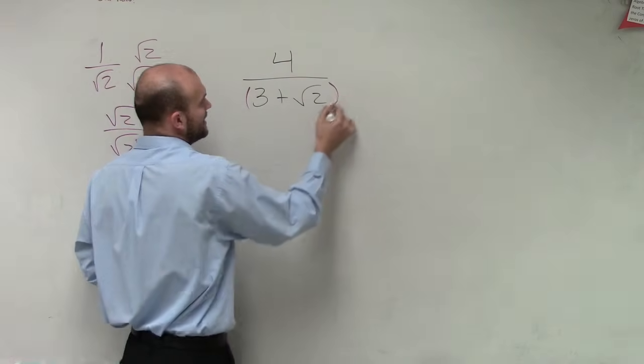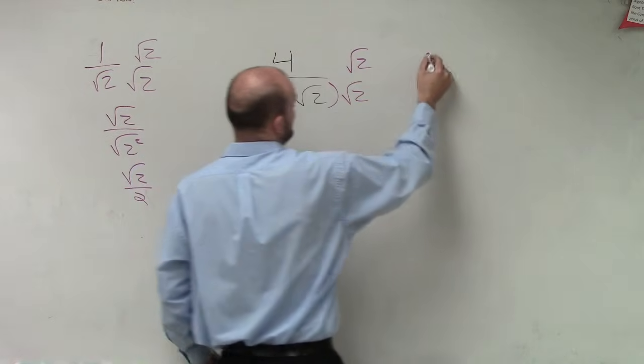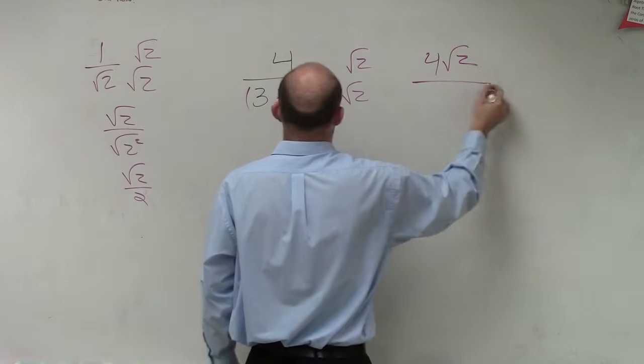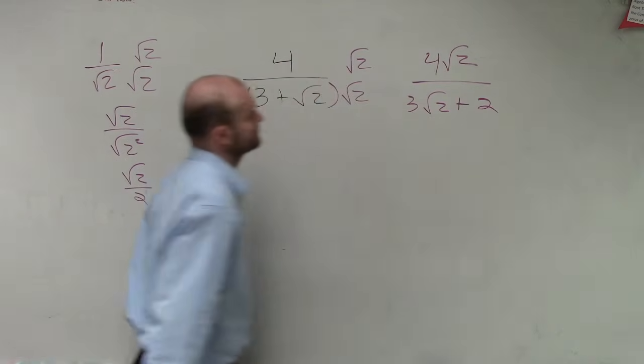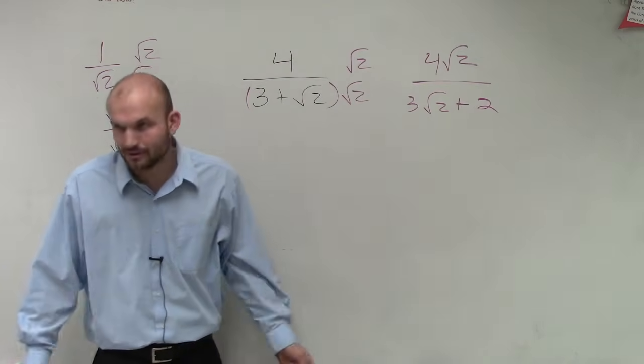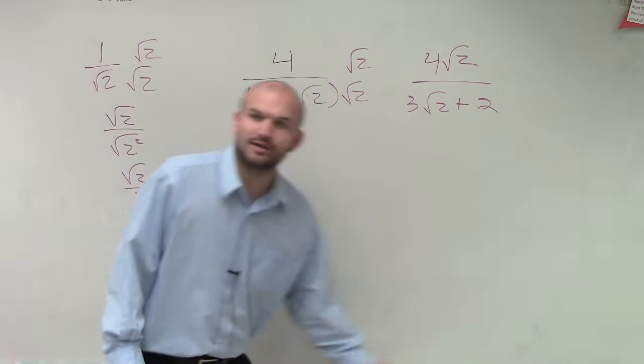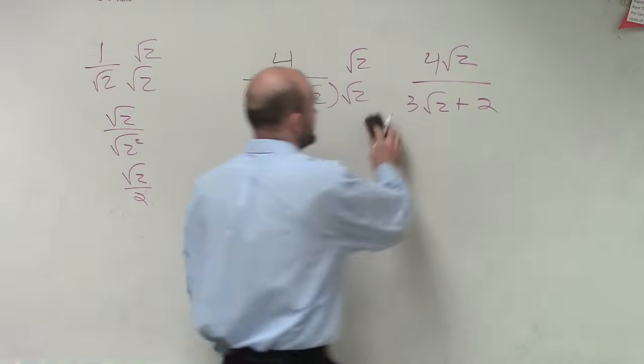But if you do that here, then you end up getting 4 radical 2 over 3 radical 2 plus 2. Again, you still have a radical on the bottom, right? So you're kind of what we call treading your tires in mud. You're not going anywhere.